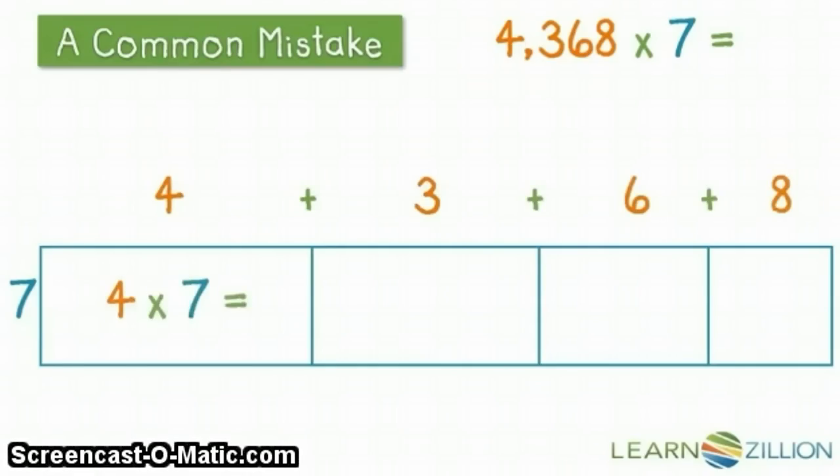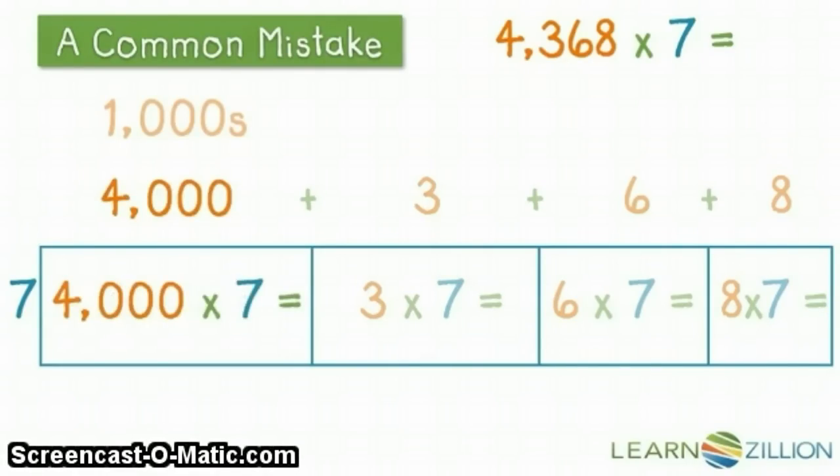They write out their number sentences and they're going through the correct process. The only problem is that they haven't respected the number that each digit represents. That's no ordinary 4. That's to the left of the hundreds, it's in the thousands place. So it's not a 4, it's a 4,000. So the number sentence is 4,000 times 7, which is very different than 4 times 7.